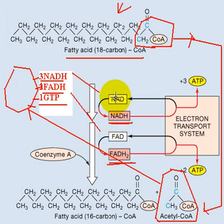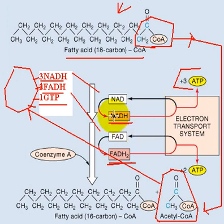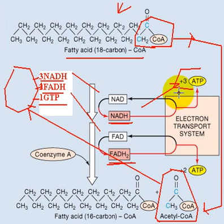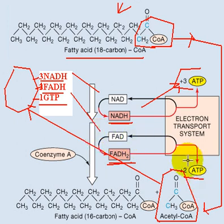Each NADH that goes through the electron transport chain produces 3 ATP, so 4 NADHs produce 12 ATP. Each FADH equals 2 ATP, so 2 FADHs produce 4 ATP. And 1 GTP equals 1 ATP. So by removing just two carbons, we produced 17 ATPs in total.